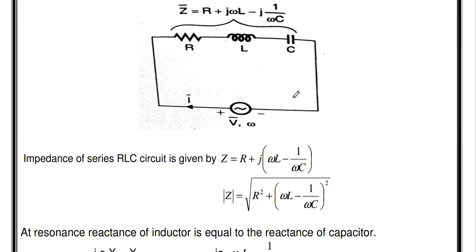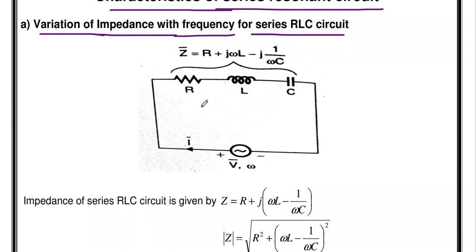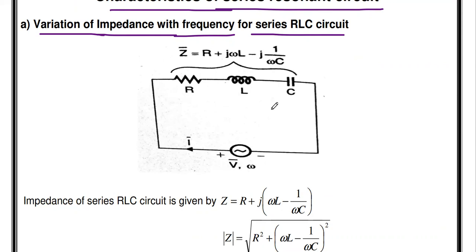To derive the impedance, consider the series RLC circuit: resistor R, inductor L, and capacitor C connected in series with an applied AC voltage V at frequency omega. The corresponding current flowing through the series RLC circuit is I. The impedance of the series RLC circuit is not constant — it will vary with respect to frequency since we are using resistance, inductance, and capacitance.